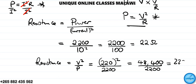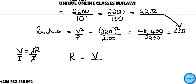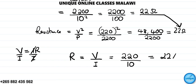Dividing 48,400 by 2,200 gives 22 ohms — the same answer. Or using Ohm's law V = IR, resistance equals voltage over current: 220 divided by 10 equals 22 ohms. All three methods give the same answer of 22 ohms.